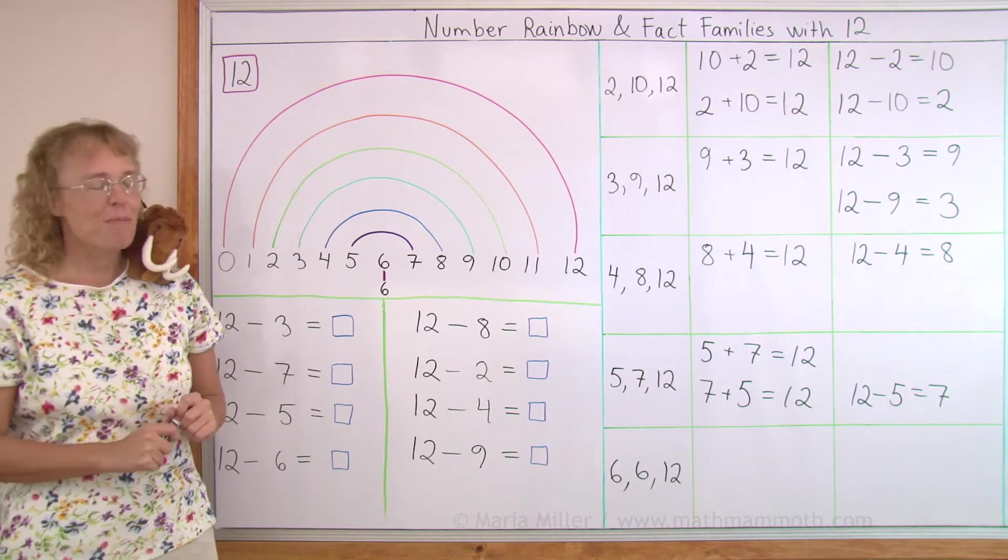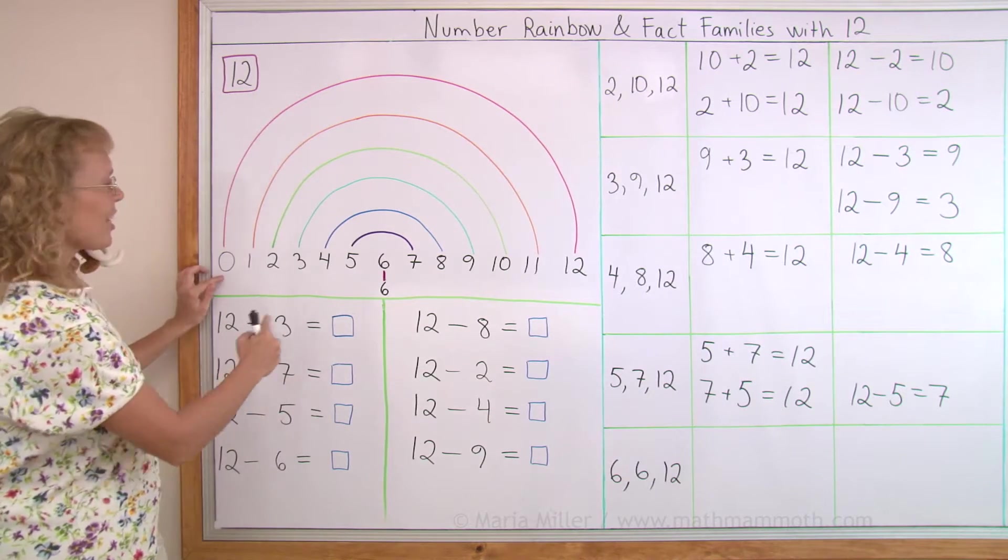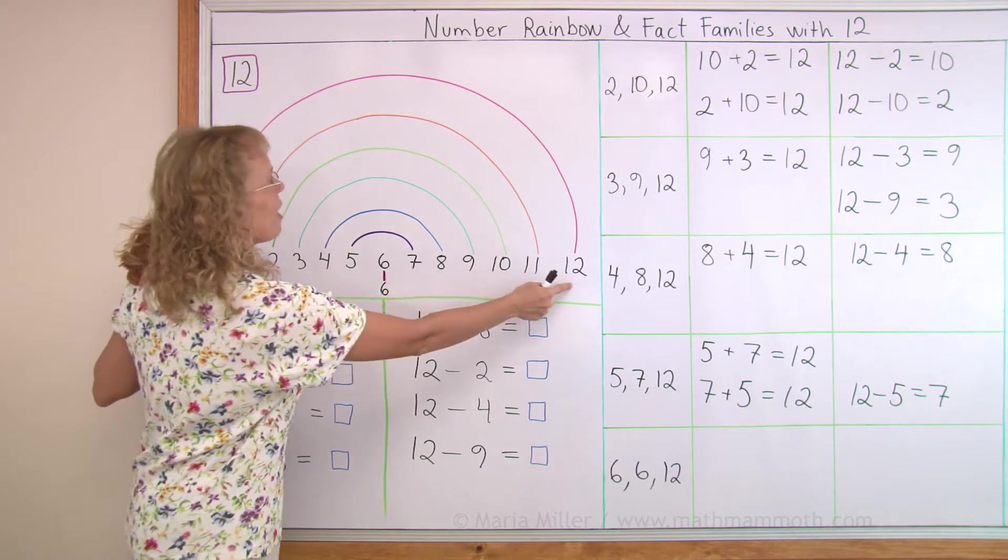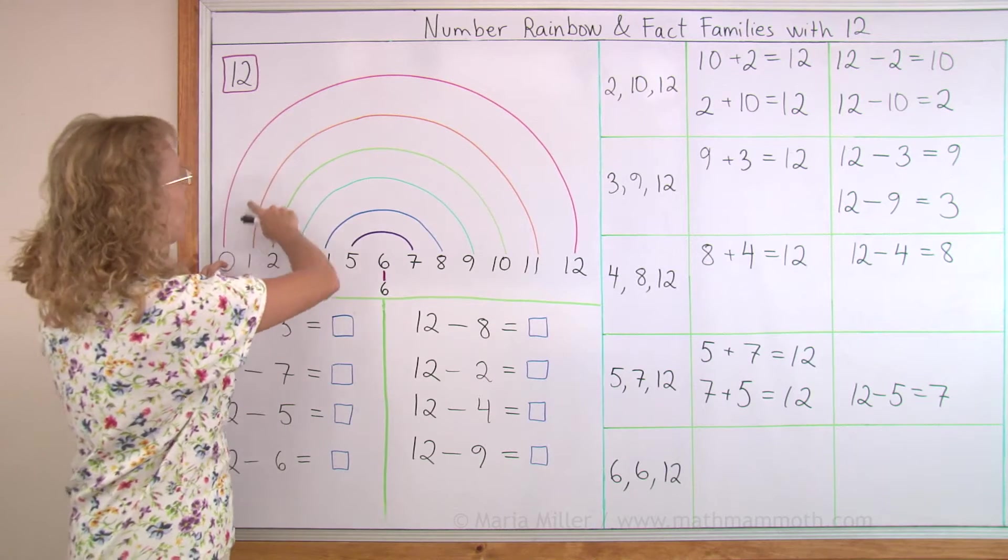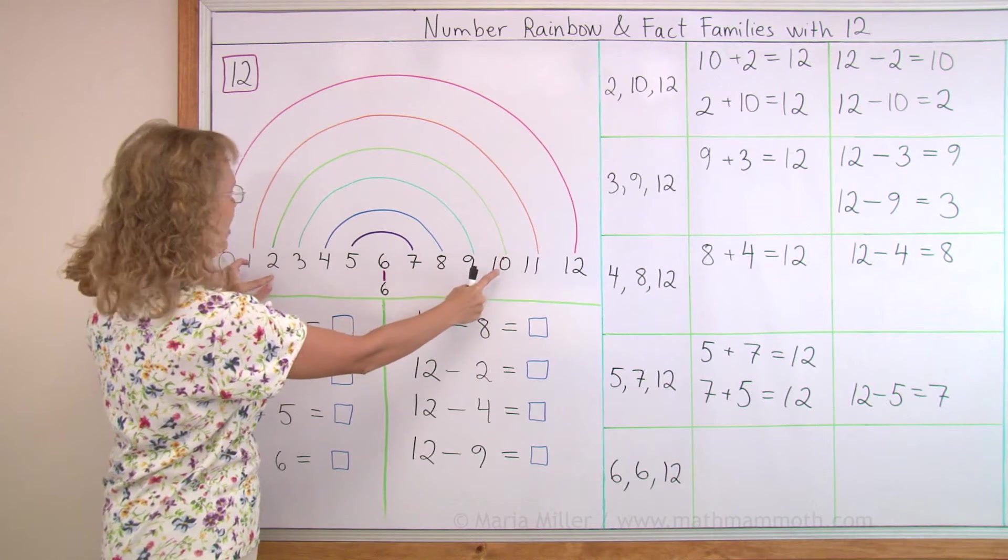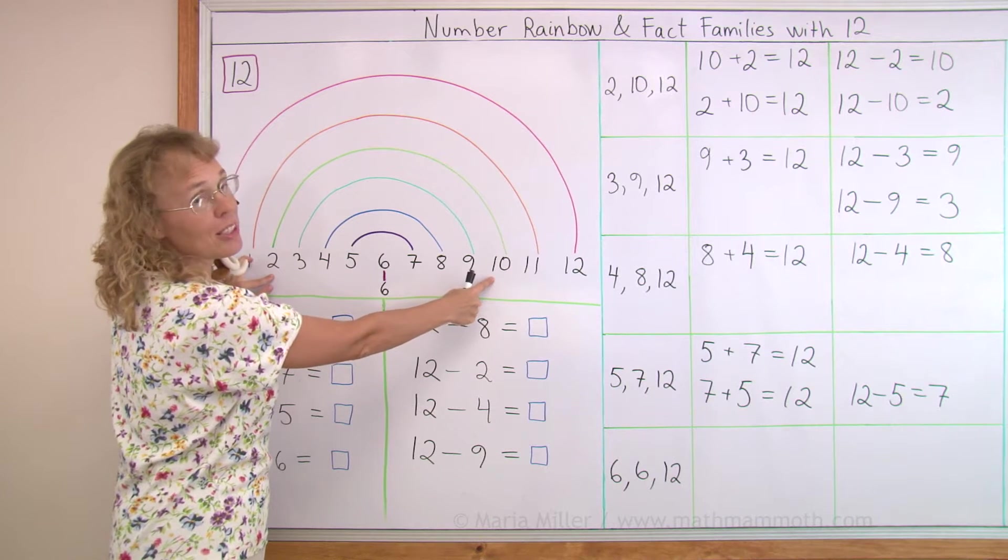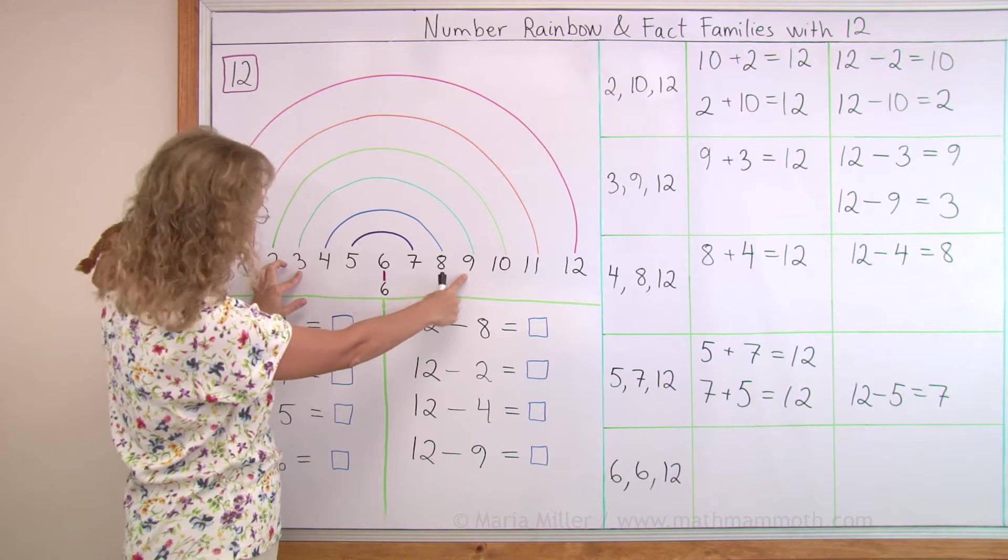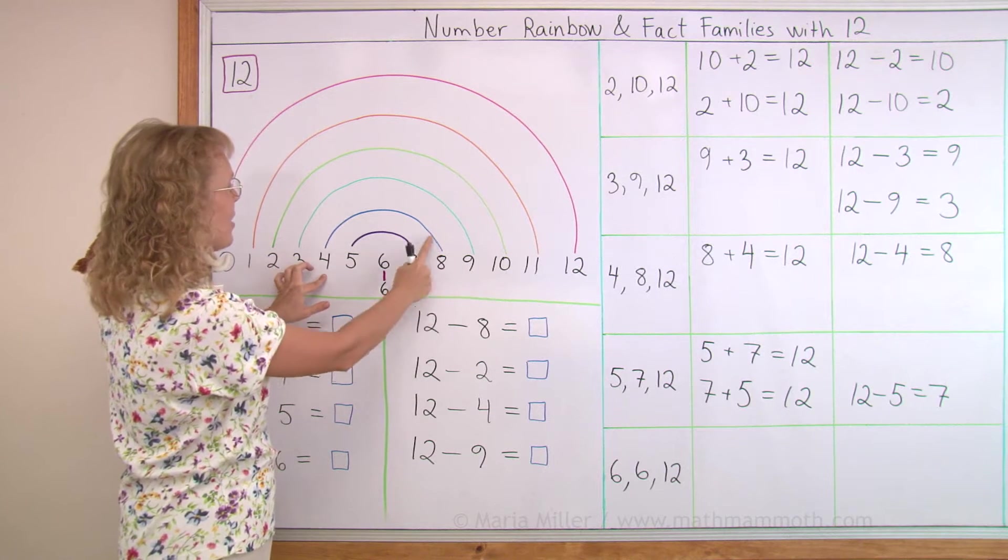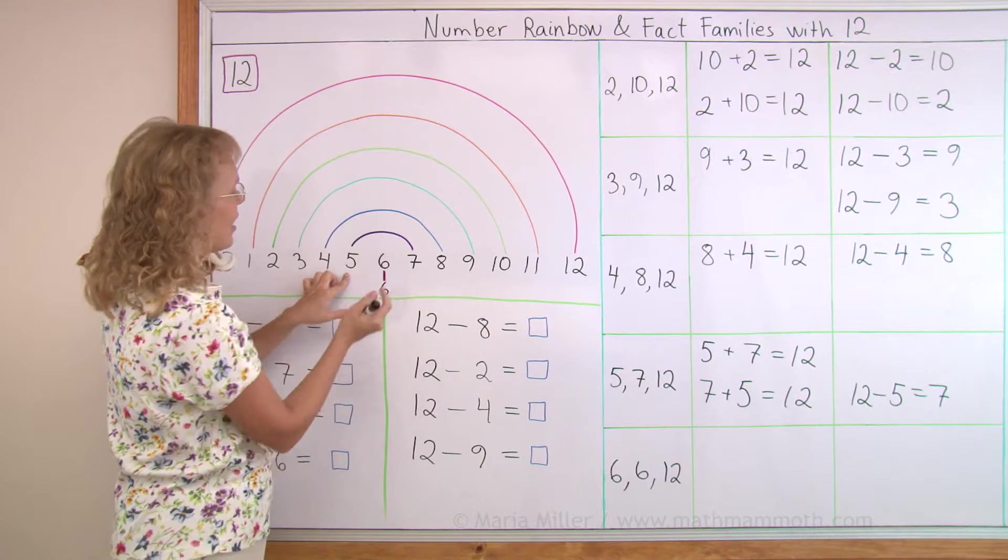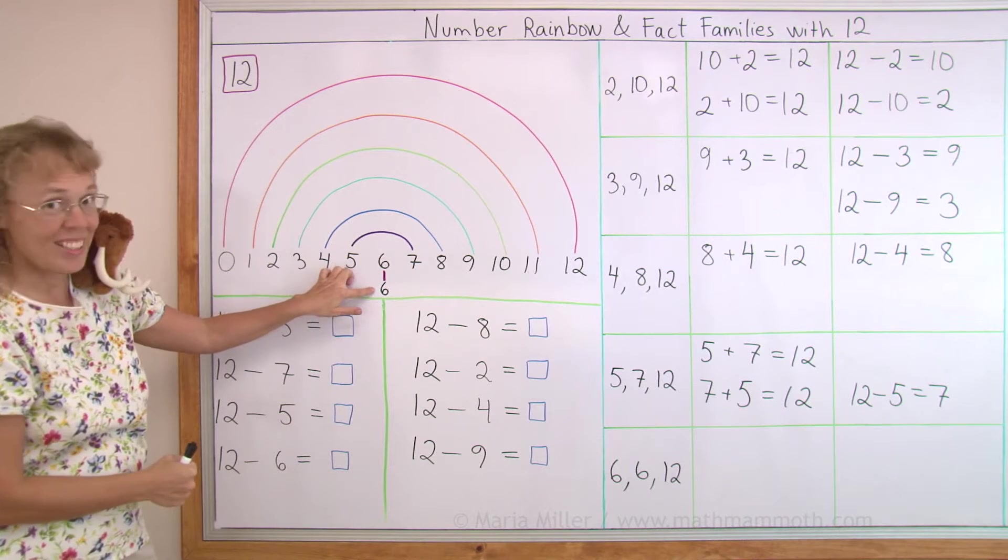First of all, the number rainbow. It has an arc connecting two numbers that add up to 12. So 0 and 12 are connected. And then 1 and 11, because 1 plus 11 makes 12. And then 2 and 10, because 10 and 2 makes 12. And then 9 and 3, 9 plus 3 is 12. 4 and 8. And then 5 and 7 makes 12.